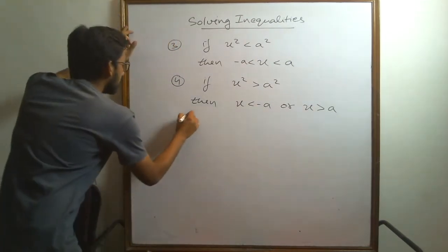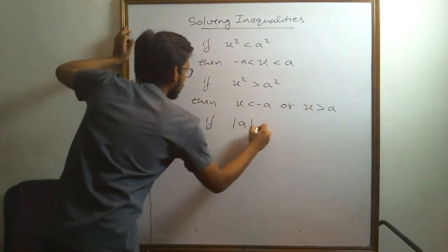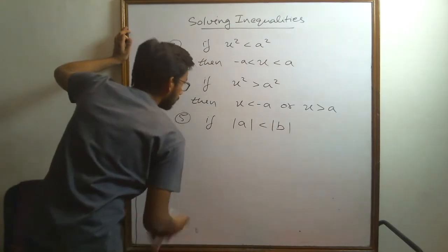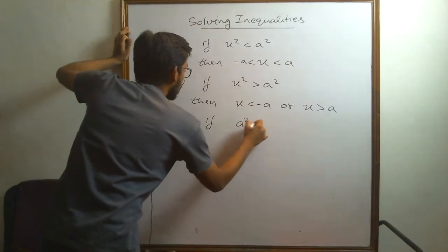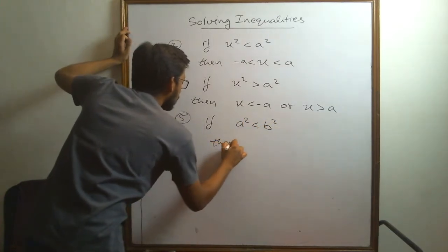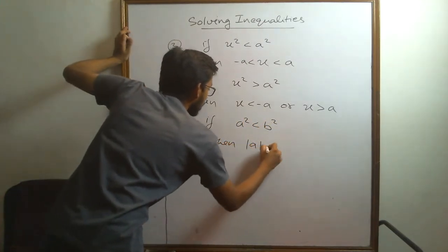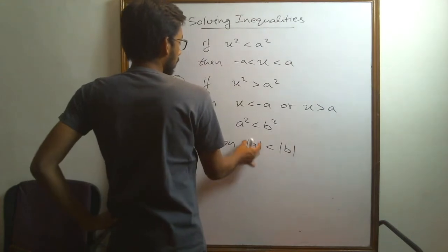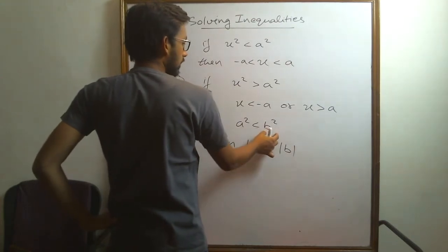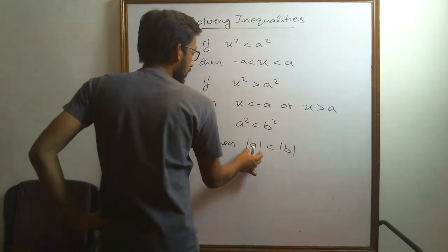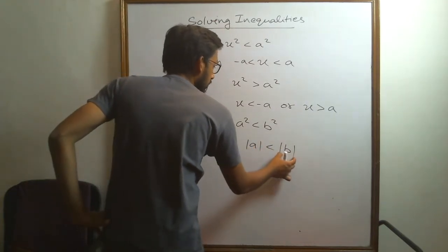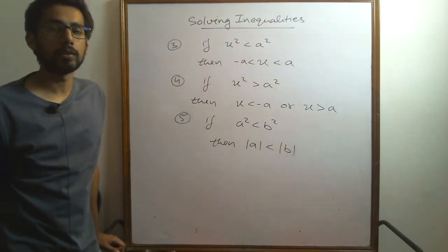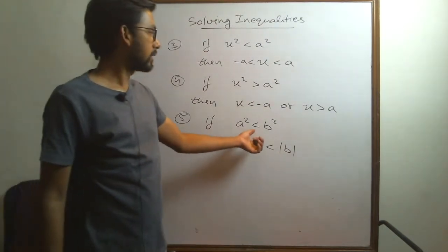Fifth, if a squared is less than b squared, then mod a is less than mod b. Think: if a number's square is less than another number's square, then definitely the absolute value of that number is less than the absolute value of the other number. Only then can we get the square to be less than the square of that number.